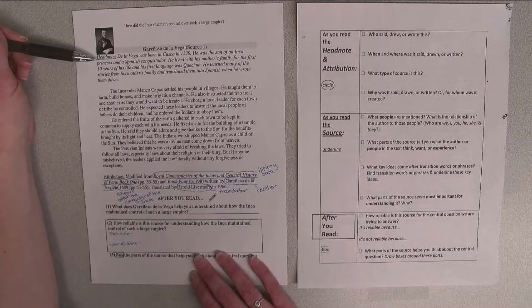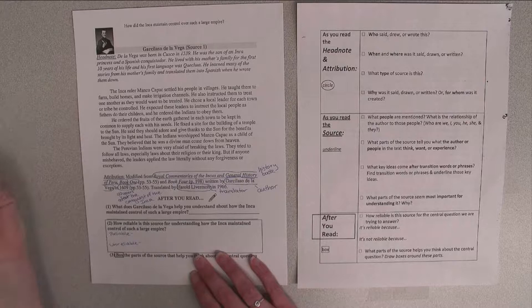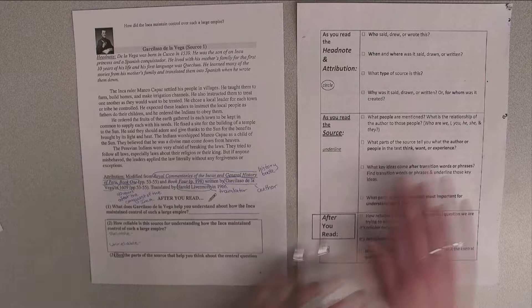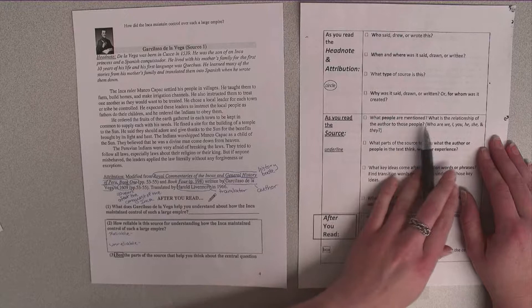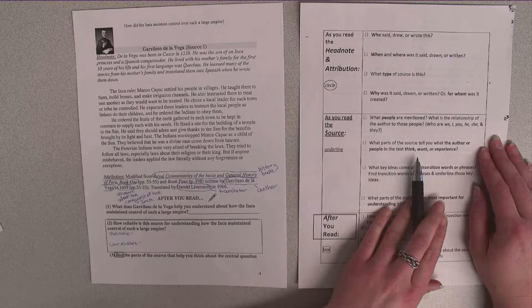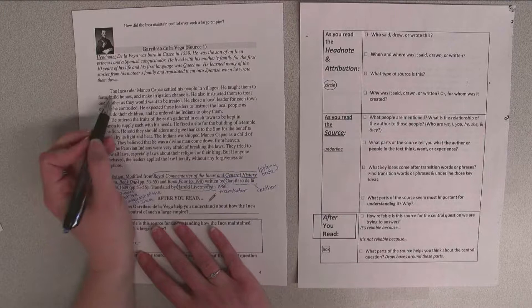So take a minute and read the headnote and try to circle any of the who, when, where, what type of source, or why it was created you find in the headnote. So now I'm going to move to my 'as you read the source' questions. And for this source I'm going to look at what people are mentioned and what parts of the source tell me what the author or people in the text think, want, or experience.